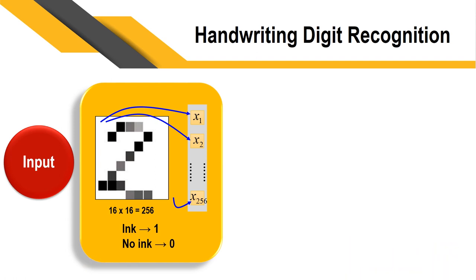Now each and every pixel will be input to each and every input node — that is x1, x2, up to x256. For example, x1 will be zero, x2 will be zero, x3 will be one, and so on.